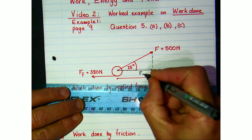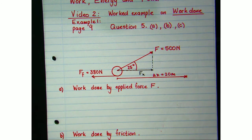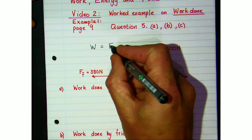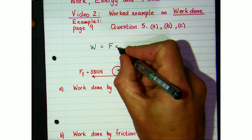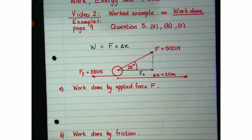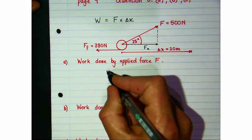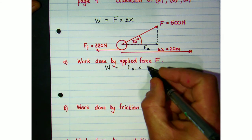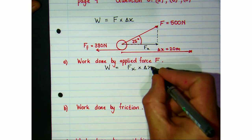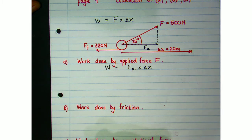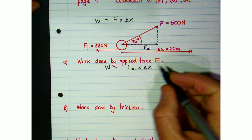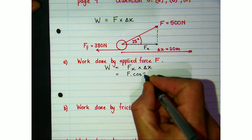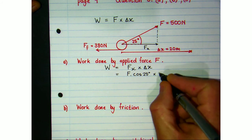We'll call the horizontal component Fx. According to the definition, we need to know the component of the force parallel to the displacement and multiply that by the displacement. So the work done by the 500 newton force would be its horizontal component multiplied by the displacement, because that component acts parallel to the displacement. Using trigonometry, Fx equals F cos 25°, multiplied by the displacement.